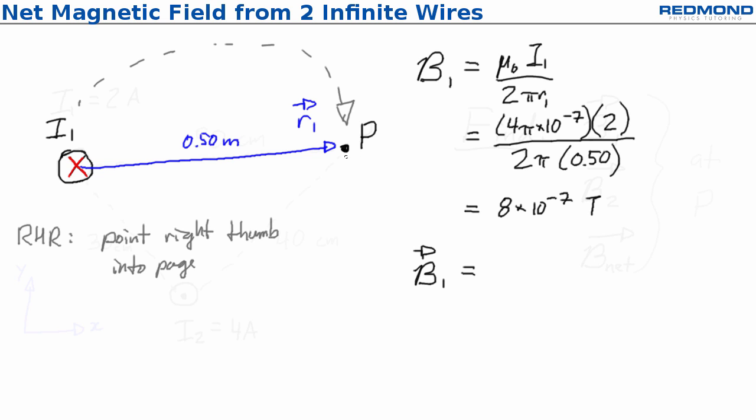I know that B1 must be perpendicular to R1, so it can either be up or down. With my thumb pointing into the page, my fingers point downwards, so B1 must be down.